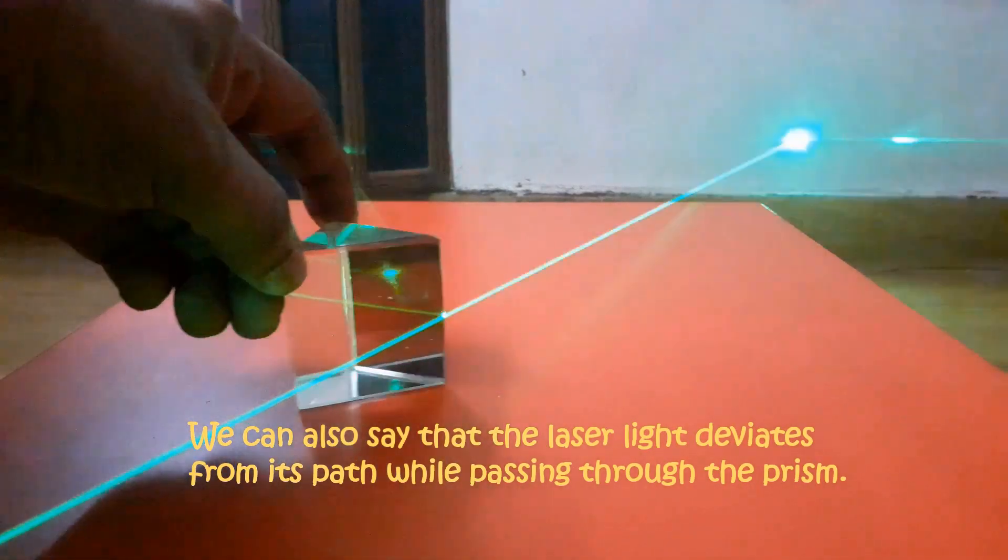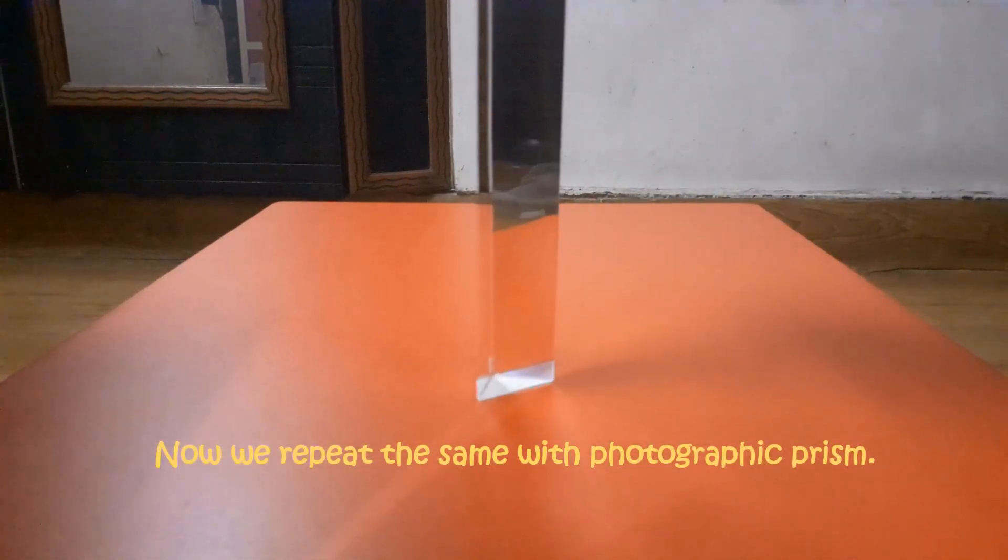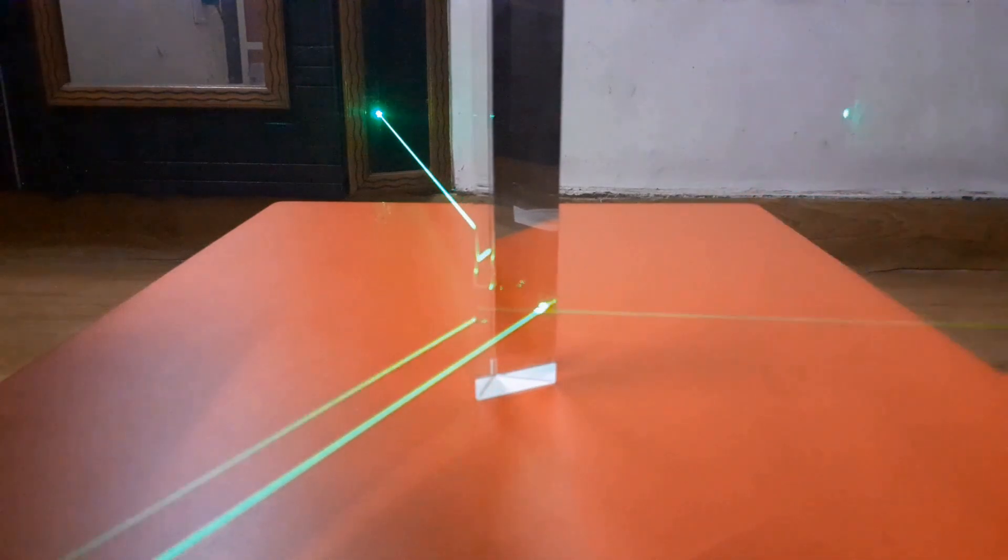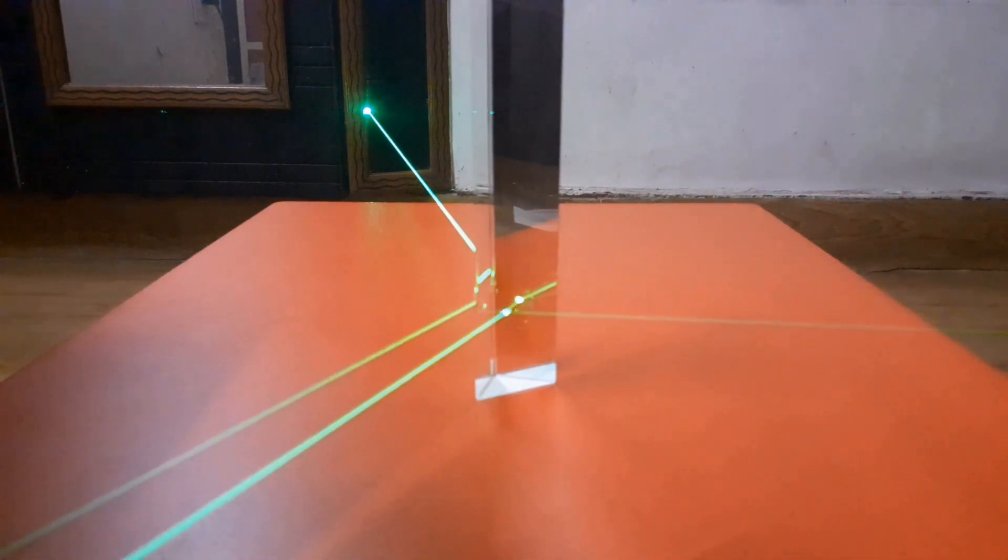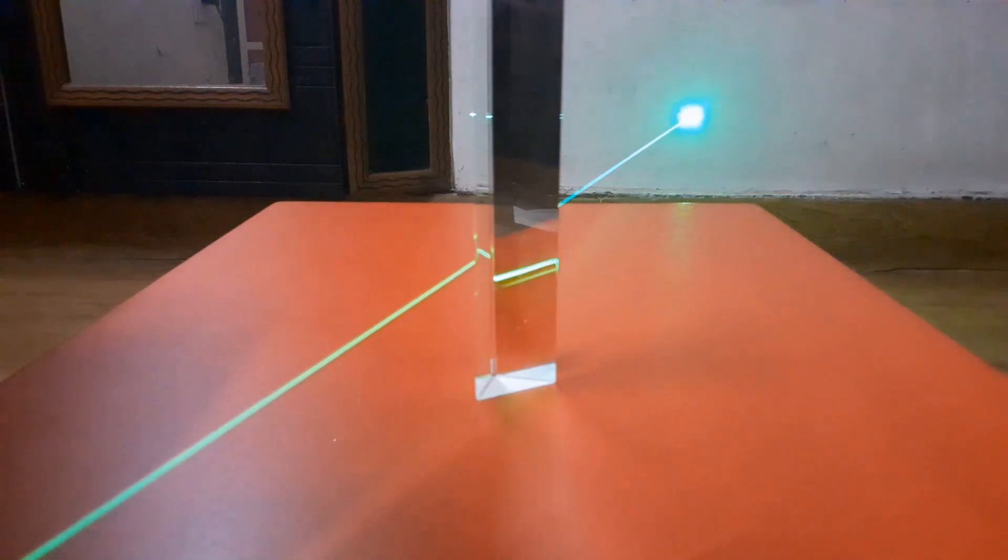Now we repeat the same activity with a high quality prism. Such a prism is used by photographers. This prism produces sharp and crystal clear images of an object. The laser beam also deviates from its initial direction while passing through this prism.